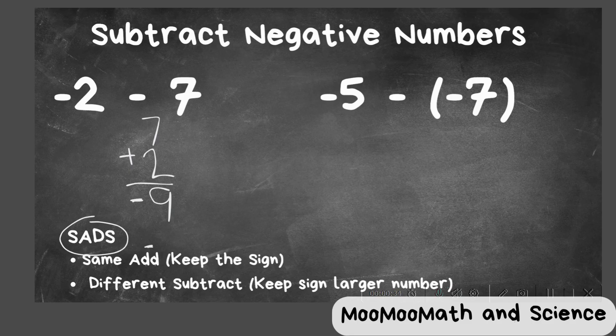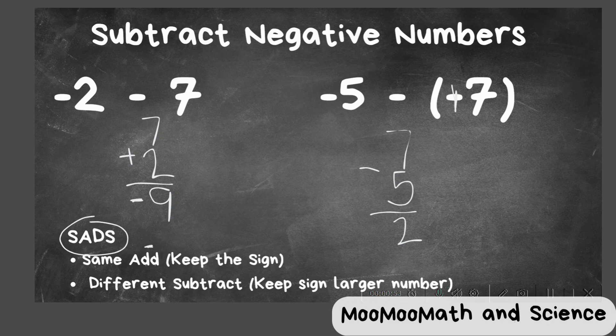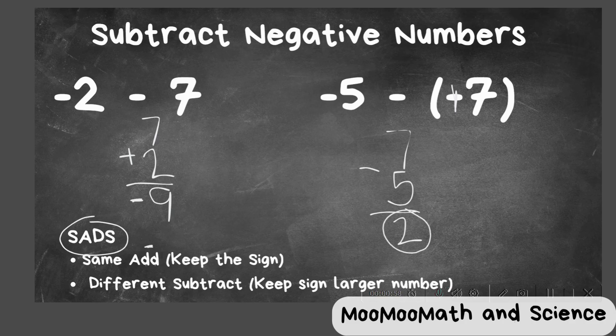Okay, this next one, again, we have minus a negative, so we're going to switch this to a positive. I'm going to place the largest number on top, and notice that we have opposites, so we are going to subtract. 7 minus 5 is 2, and then we're going to keep the sign of the larger number, 7, so it is a positive 2.